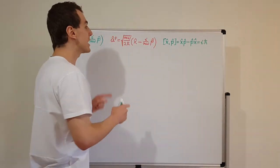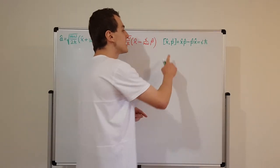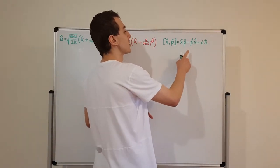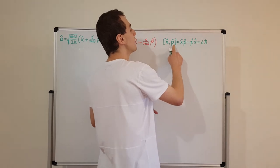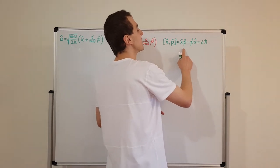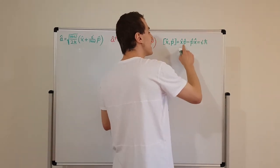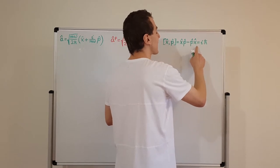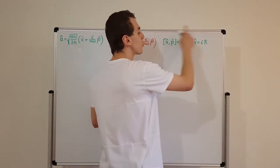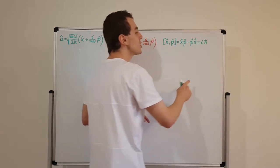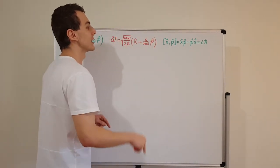We have a relationship that links position and momentum together: the canonical commutation relation. The commutator of position and momentum is defined as xp minus px, and this is equal to i h bar. I proved this canonical commutation relation in a previous video in the quantum mechanics playlist.